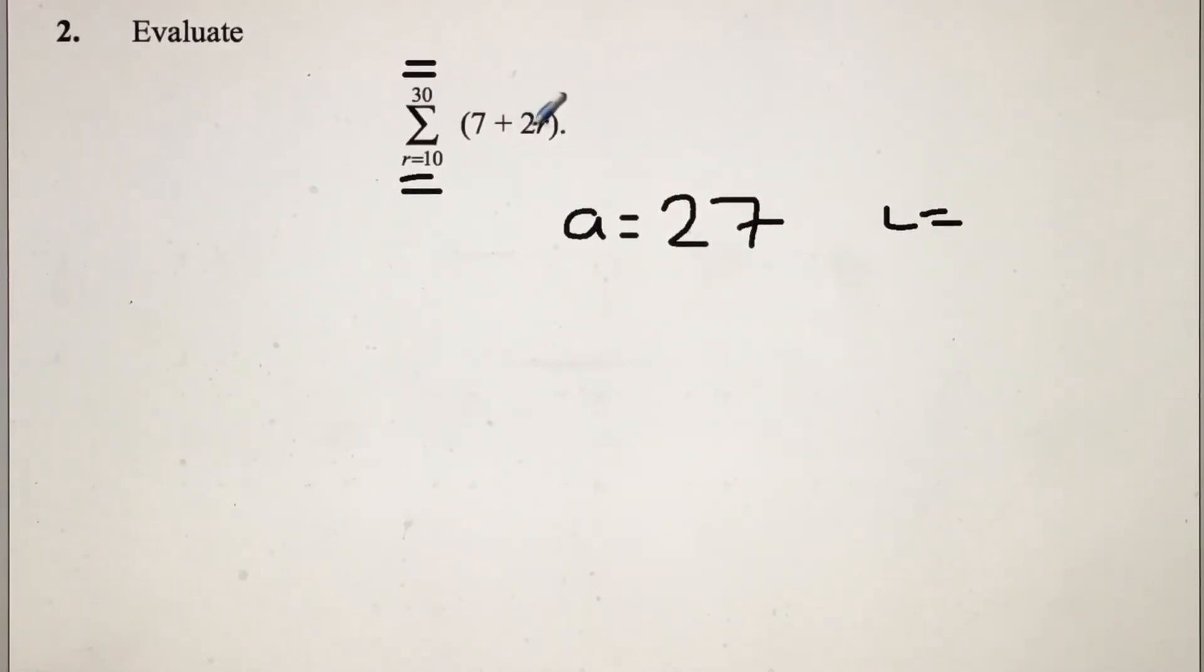For 30, substitute that into the R, so 30 times 2 is 60. 60 plus 7, which gives us 67.